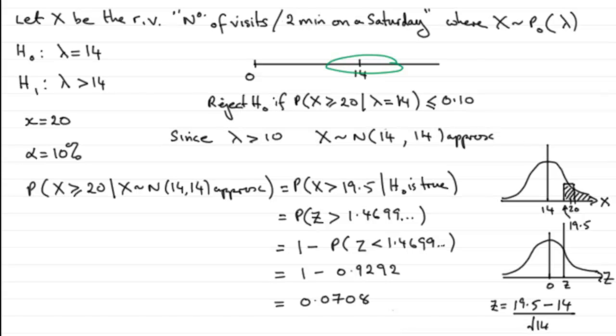And we conclude that since that probability then, X greater than or equal to 20, given that lambda equals 14, turns out to be less than 0.10, it's a significant result. The rate of visits is greater on a Saturday. All right, so I hope that's given you some idea then how to go about this particular problem.